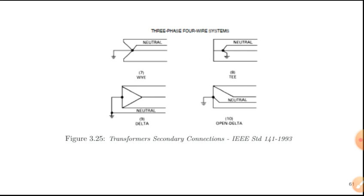According to IEEE Standard 141-1993, there are different connections for a 3-phase 4-wire system. The first is a Y-connected 3-phase system where the neutral point connects to the neutral line. It's also possible to use a delta configuration, though it's not practical and it's complicated — we call that the high-leg system, used for advanced purposes not covered in this course. There are also the T transformer and open delta configurations. We will be focusing on the Y 4-wire system.